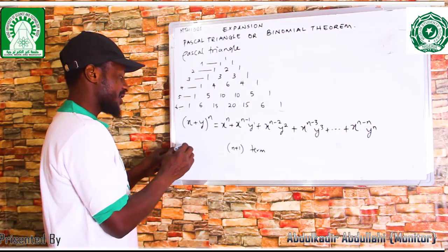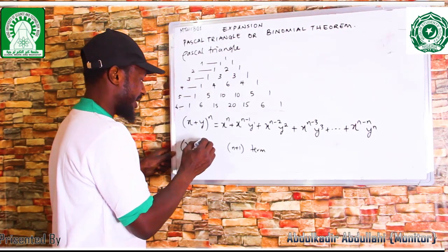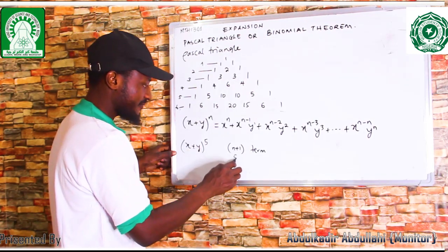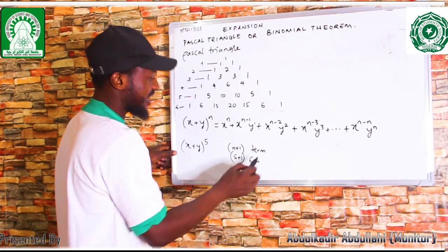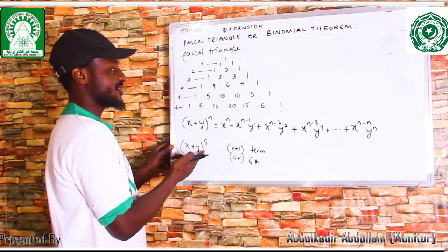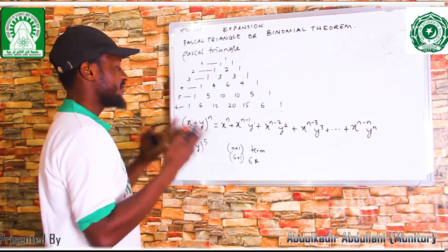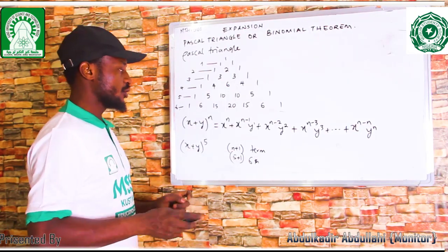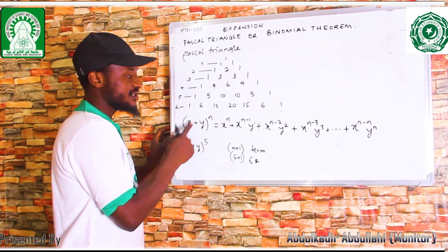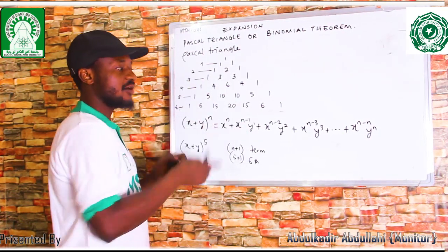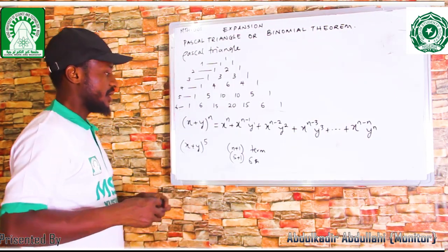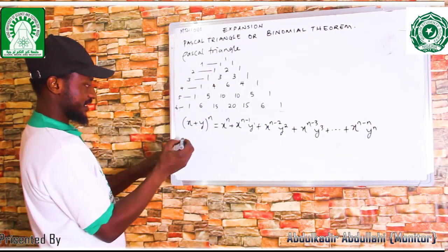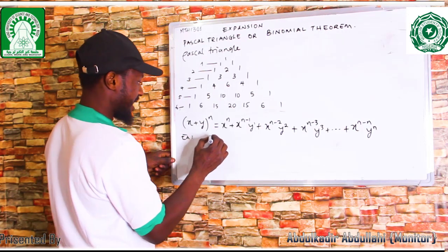That is to say, if you are given an expansion with power 5, the number of terms you are going to have is 5 plus 1, so you are going to have 6 terms. Whenever you are expanding with power 5, you have 6 terms; with power 4, you have 5 terms; with power 11, you have 11 terms. Also, whenever you are expanding, when the power of the first number is decreasing, the power of the second number will be increasing.